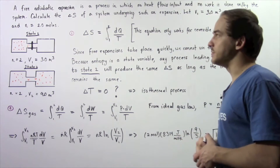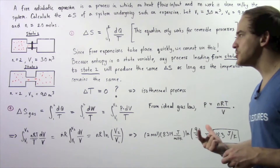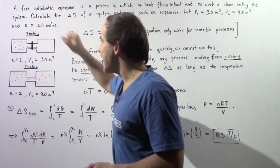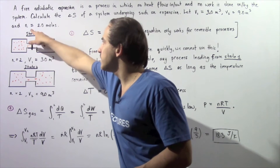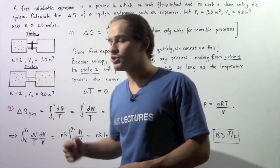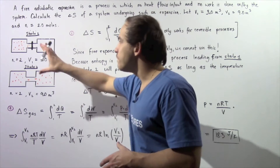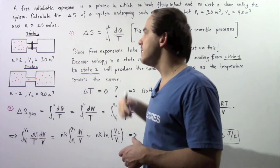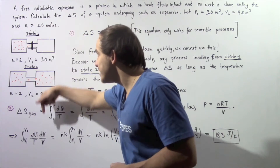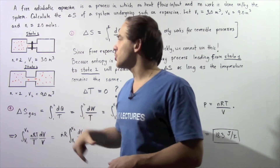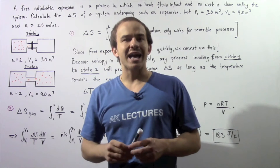Let's look at the following example: calculate the change in entropy of an isolated system undergoing a free adiabatic expansion. We begin at state 1 and go to state 2. In state 1, the number of moles of gas is 2 moles, and that remains constant in state 2 since we're dealing with an isolated system. The volume in state 1, V1, is 3 meters cubed, and V2 is 9 meters cubed. So the volume increases and the pressure decreases. The change in temperature remains constant because we're dealing with a free adiabatic expansion.